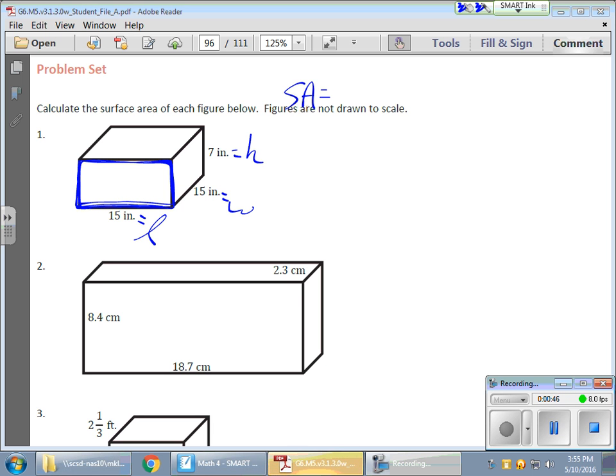For example, this guy here in the front, this guy is a length times a height. Because this is 7, and this is 7, and that happens to be the height. And this guy is 15 over here, so you have a 15 times 7, but it happens to be a length times a height. Depending on which side you're actually finding the area for, that changes what dimension you're going to need.